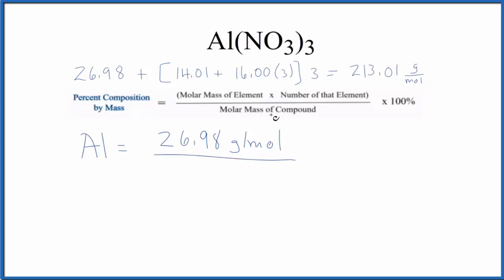Then we put the molar mass for the whole compound underneath. We multiply by 100 to get a percent. Grams per mole cancels out since it's on the top and the bottom, and we end up with 12.67%. So that means that 12.67% of the mass of this compound will be aluminum.